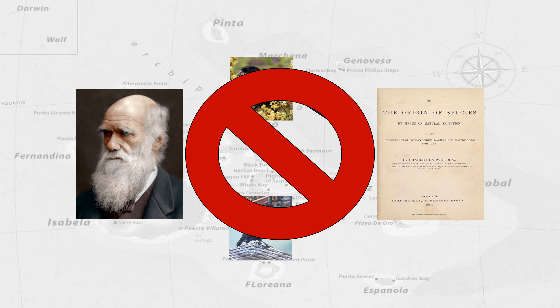Whilst visiting the Galapagos, Darwin himself thought that most of the finches were of the same species, failing to appreciate the close relationships that we now know are actually different species.